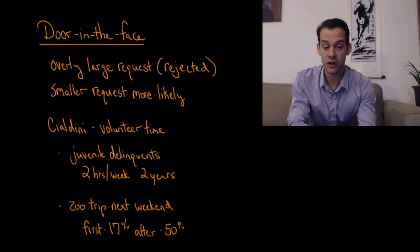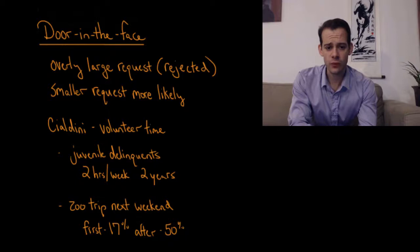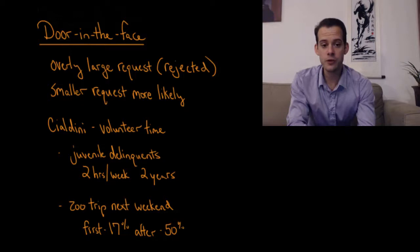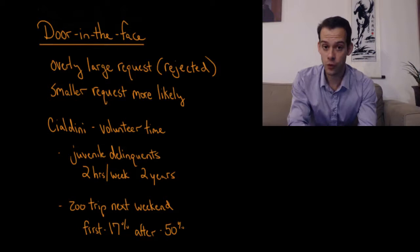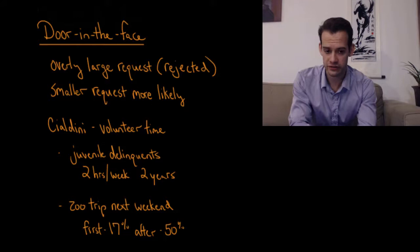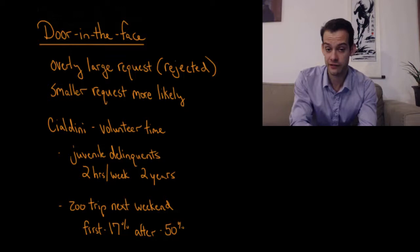A study on this was conducted by Robert Cialdini who's written a number of popular books on persuasion. He did a study where researchers went out and asked people to volunteer their time. They went up to people on the street and said would you be willing to help juvenile delinquents two hours a week for the next two years? Not surprisingly they didn't get any volunteers for this. This was the large request that they knew would be rejected. But then they asked about a smaller request which was actually still a fairly large request: would you be willing to take these juvenile delinquents on a trip to the zoo next weekend for a few hours, just one time?